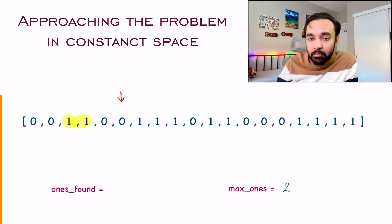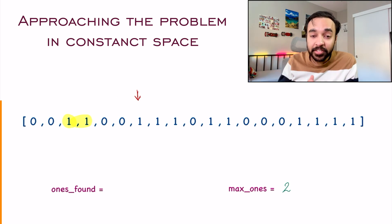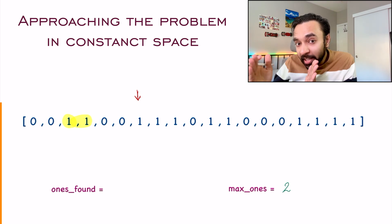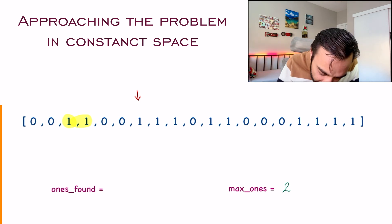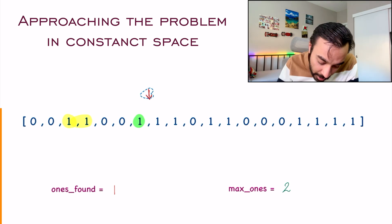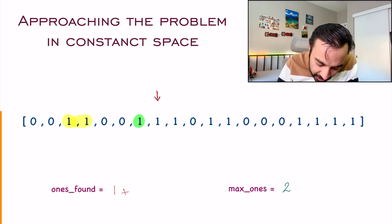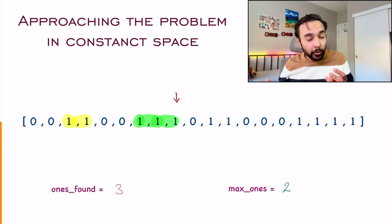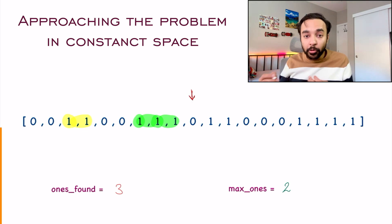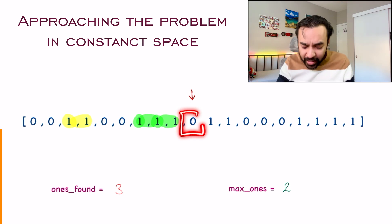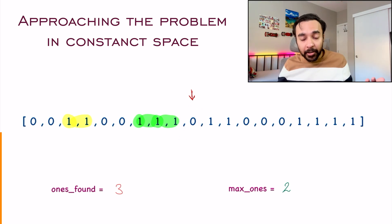You move ahead and you get a zero again. Zero is of no use to you. So we move ahead. I land at a one again. And so it is time that we find out, okay, how many consecutive ones I can find now. So once again, I will keep a track. Now go ahead. You find a one again. So I will simply add this value. Move ahead now. And what do you see? You see a one again. So once again, I will add one to my ones found. And I get a three. So far so good. You found three ones this time. And the next step is that you move ahead. As soon as you move ahead, you will get a zero again, right? And that means, okay, the number of consecutive ones have ended.